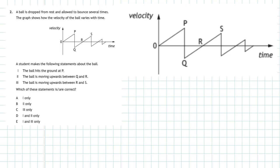We can show from the velocity-time graph where all the velocity vectors are. At time zero the graph starts at zero — no velocity. To draw the vector, we start at the time axis and move up to meet the graph, drawing a little arrow. That arrow is the velocity vector at that point. We can do this at multiple times along the graph, going from the time axis up to the graph and drawing arrows — these represent the actual velocity vectors of the ball at each given time.